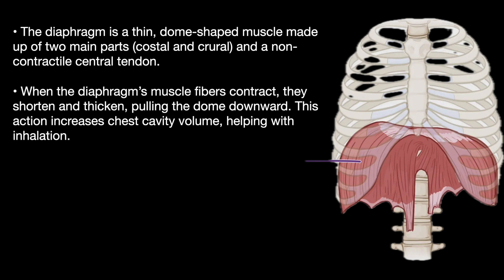When the diaphragm contracts, it shortens and thickens, pulling the dome downwards. This increases the capacity of the chest and helps in inhalation.